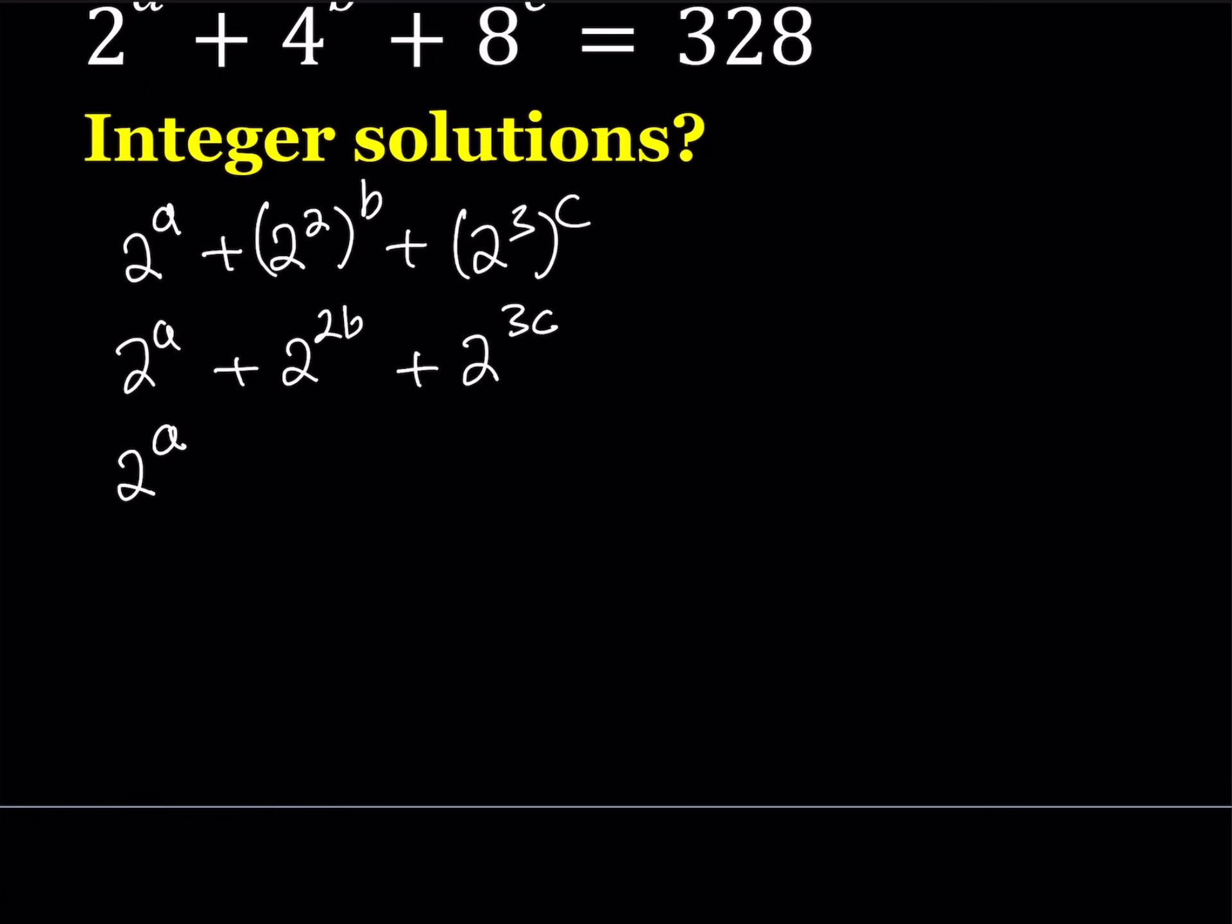Let's take out 2 to the power a. And now what happens is this becomes 1, this becomes 2 to the power 2b minus a, plus 2 to the power 3c minus a.